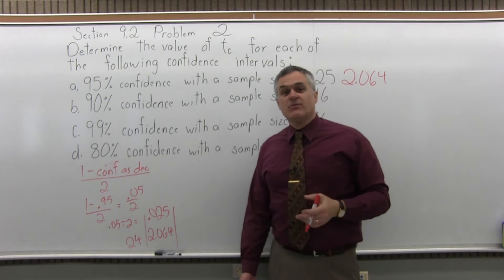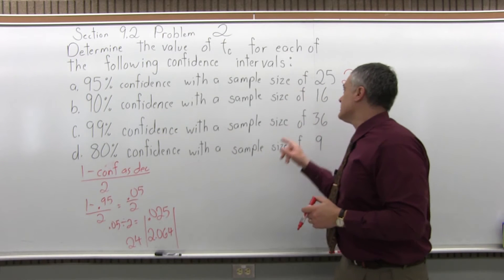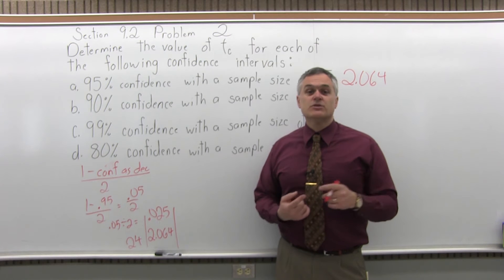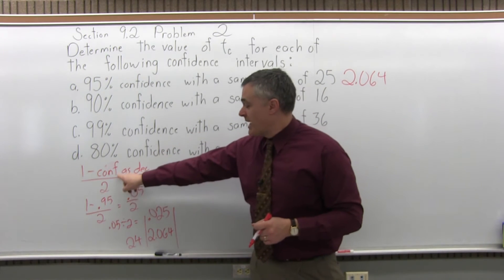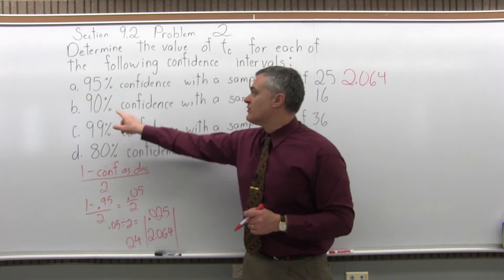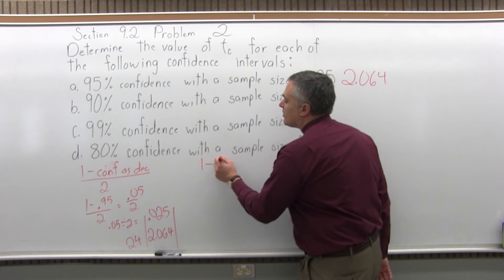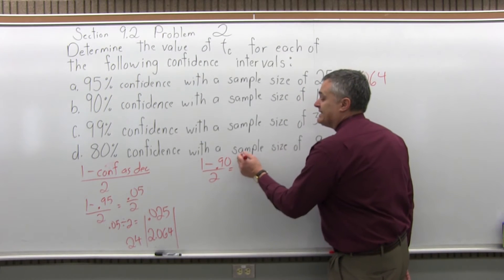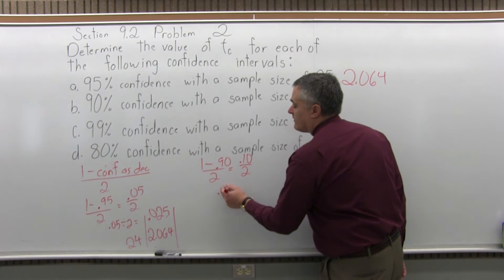It's the same process for B, C, and D. For a 90% confidence interval with a sample size of 16, determine the correct column and the correct row and see where they intersect. The column comes from 1 minus the confidence level as a decimal, divided by 2. So for 90% confidence, you do 1 minus 0.90, divided by 2. 1 minus 0.90 is 0.10, divide by 2, which is 0.05.